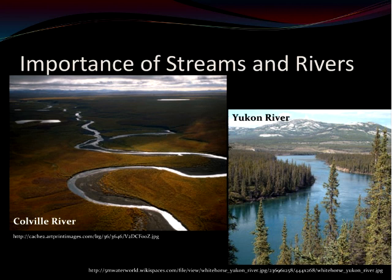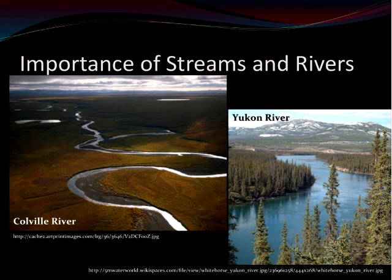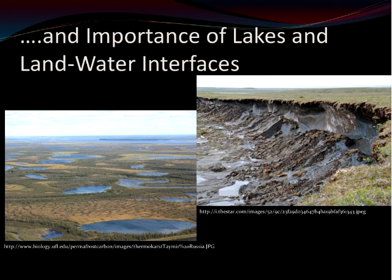We now appreciate the importance of streams and rivers in the global carbon cycle, and we're starting to explore parts of the planet where drainage networks have been less studied. An important area is the northern hemisphere and polar region. Two rivers — the Colville River and the Yukon River, both in Alaska — are important areas for studying carbon cycling and quantifying the role of inland waters in both lateral and vertical fluxes of terrestrial-derived carbon. At high latitudes, we're also appreciating the role of small lakes, which are quite numerous, and the role of land-water interfaces across the landscape.